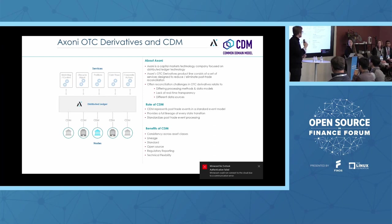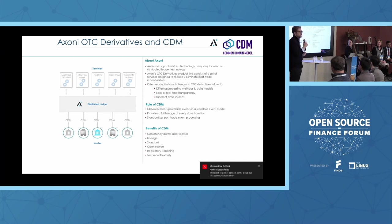The other component of where we're using CDM is on standardizing how those events are actually processed, not only represented. A couple of the benefits we find include consistency across asset classes, that sense of lineage, and of course it's a standard and open source. The regulatory reporting — especially the DRR initiative that's just launched — is a large benefit and incentive for firms to move to CDM. And also technical flexibility: CDM is a model but it can be represented in a number of different software languages like Java and Scala, as well as serialized in JSON, Avro, or Protobuf.